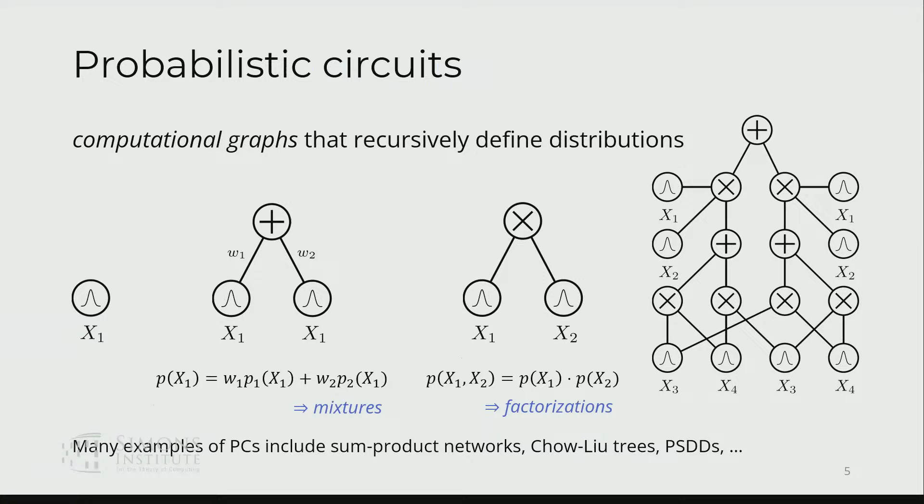What are these models, probabilistic circuits? At a very high level, you can just view this as a computational graph that's recursively defining distributions. At the base level you have a single univariate Gaussian—that's a simple distribution. The idea is we can combine distributions recursively to define more and more complex ones. A weighted sum or convex combination of distributions is also a probability distribution. You can multiply distributions to obtain another distribution over a larger set of variables.